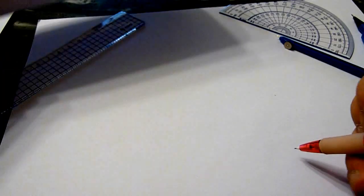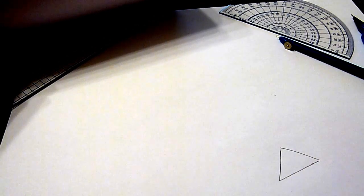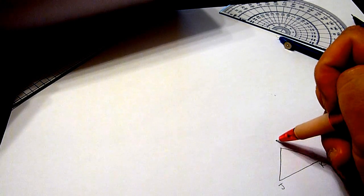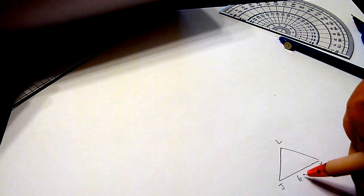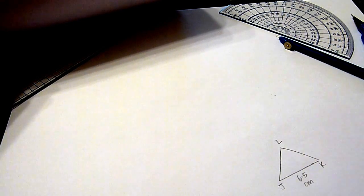First, we sketch the diagram. That gives us an idea how the triangle will look like. And the measurements are put in the diagram.